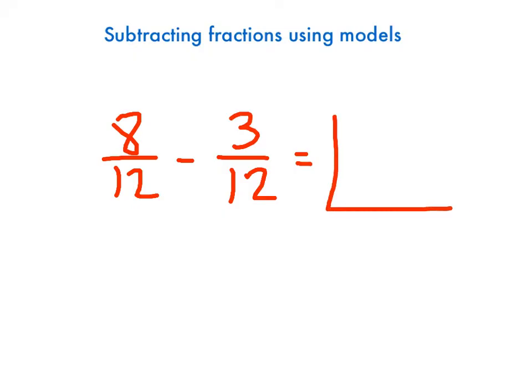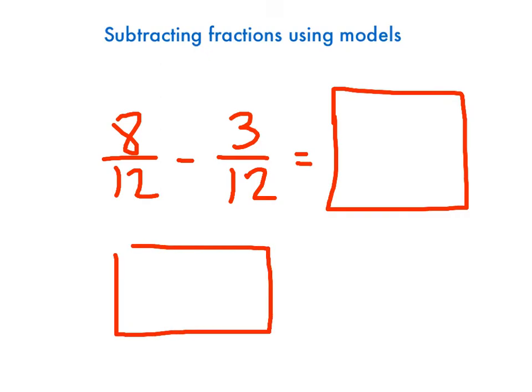Okay, now our models are going to be a little bit different than when we did addition. The way we're going to do these models is we're just going to have one model, or one block, say block, I guess, array. Array. One array. Okay, I'm going to cut them into twelfths. So I've got thirds, and I'll cut those into fourths. They're roughly the same size.